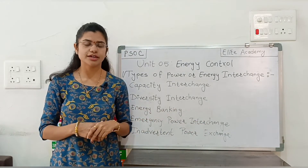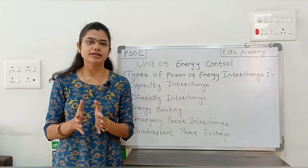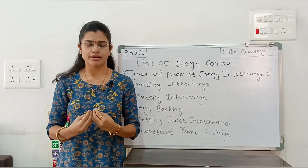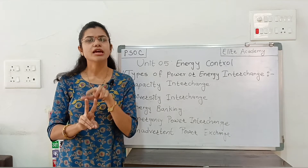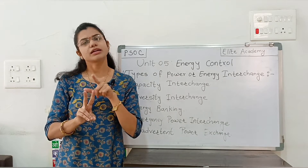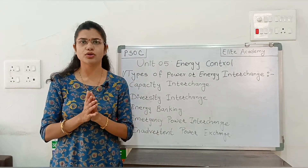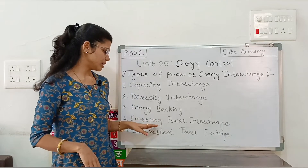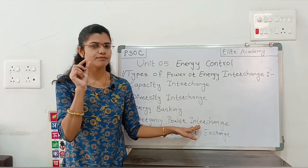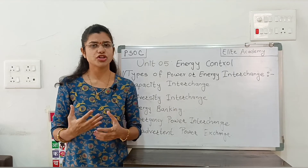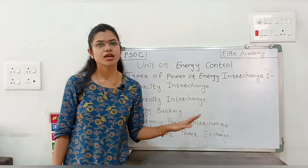The fourth type is emergency power interchange. As the name suggests, this occurs during an emergency when a plant cannot meet the required demand. Under emergency power interchange, this power interchange is for a very short time period and the cost for this interchange is very high.